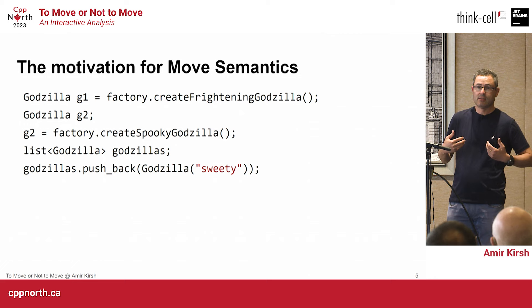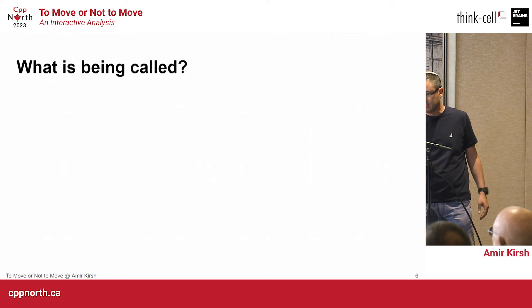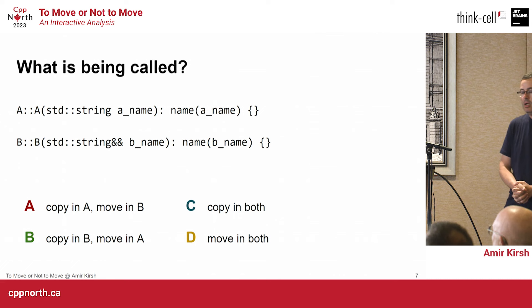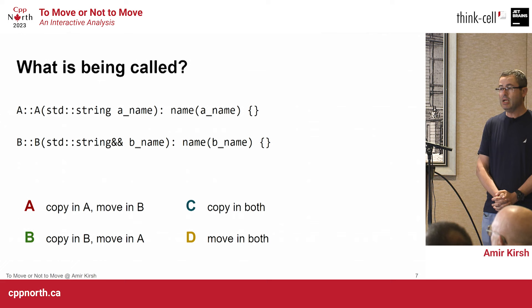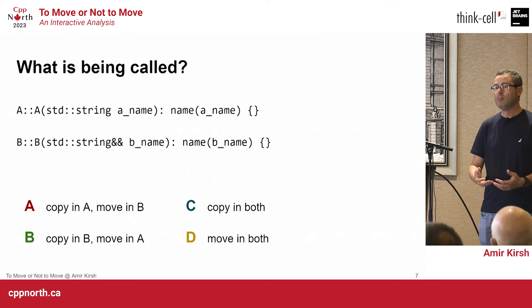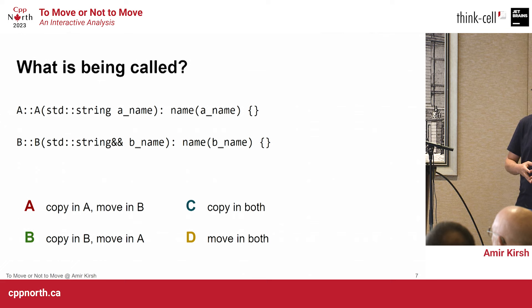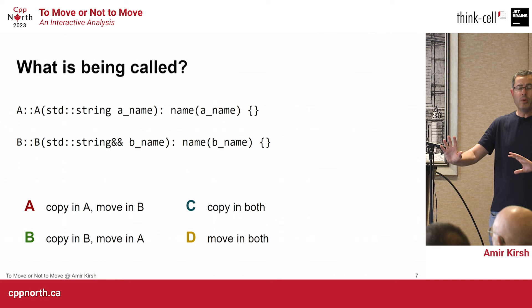For that we need a certain syntax to communicate with the compiler, saying we expect something that is short-lived, that is temporary. For example, a constructor taking a string: in the first case, string by value; in the second, we use the newly added C++11 syntax of rvalue reference. They use two ampersands for rvalue, meaning the string in the second constructor is an rvalue — a temporary that is going to die.